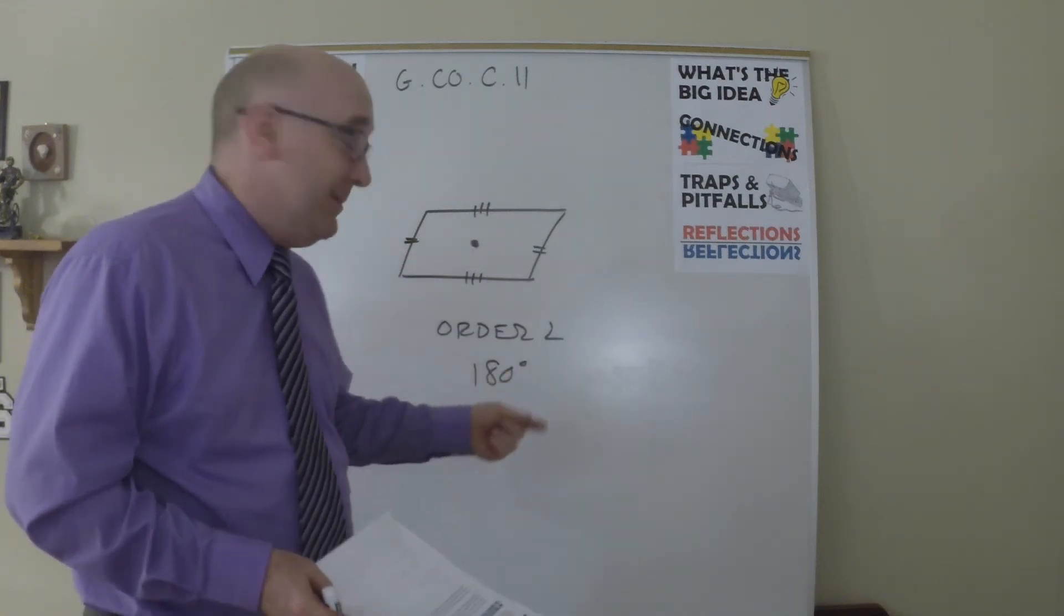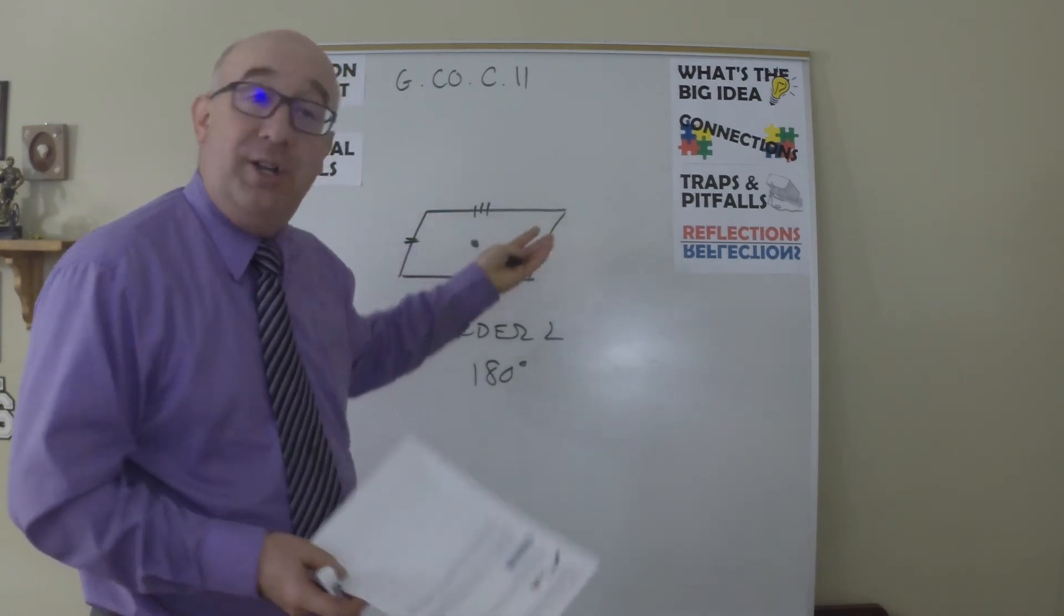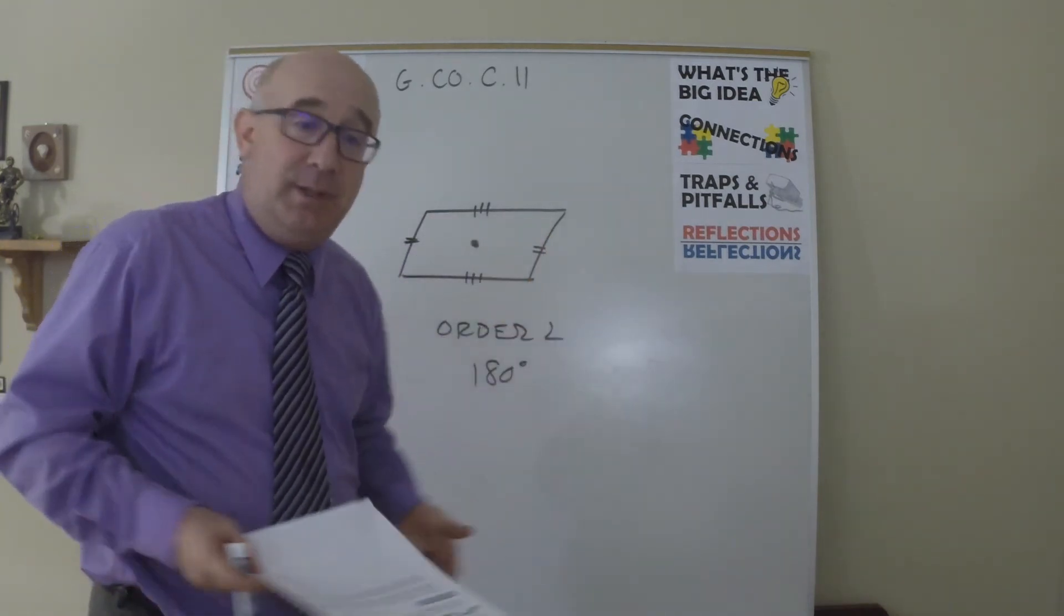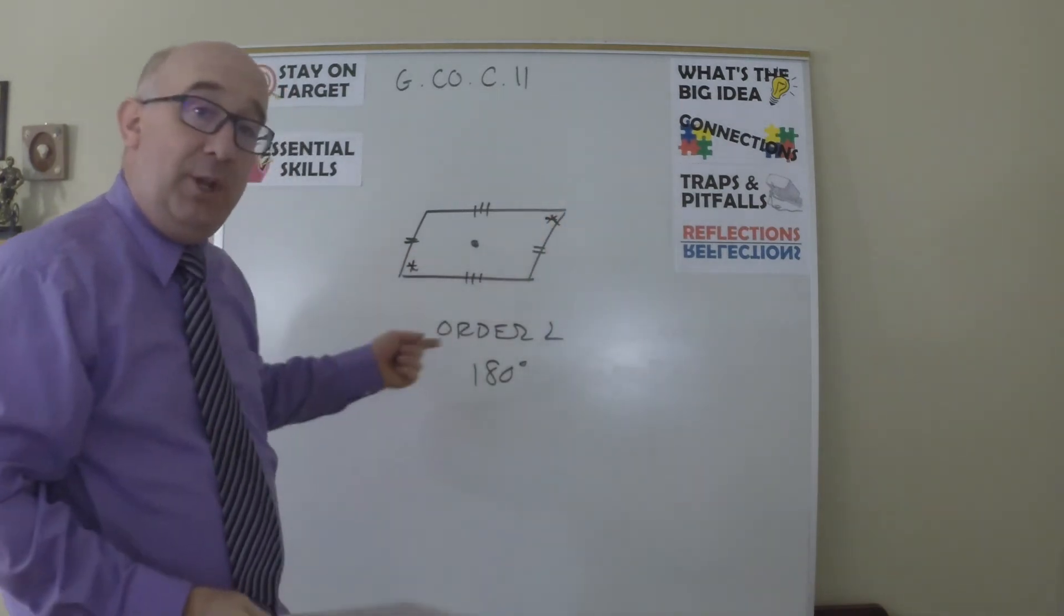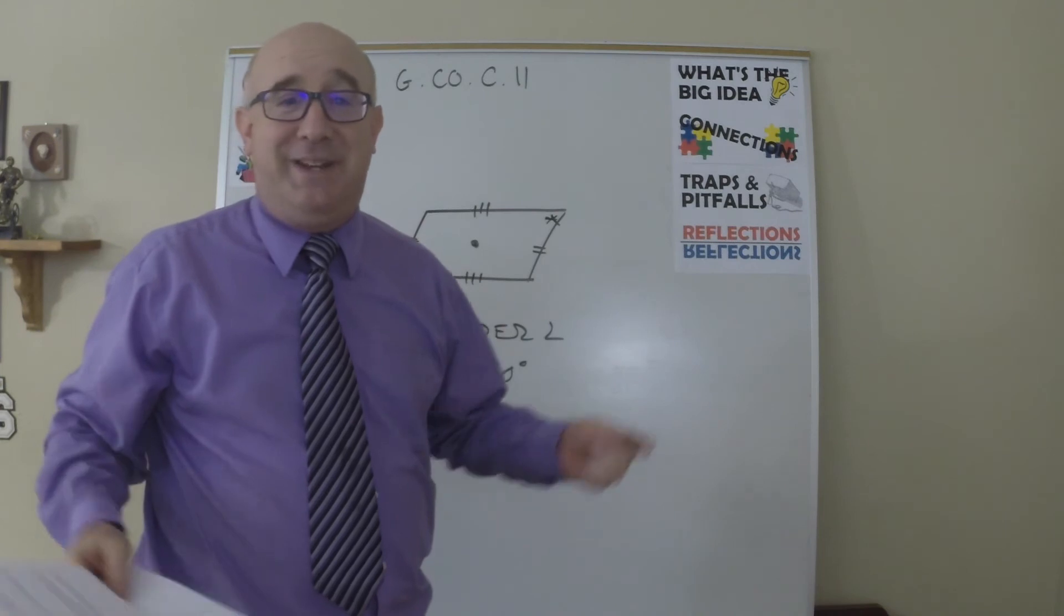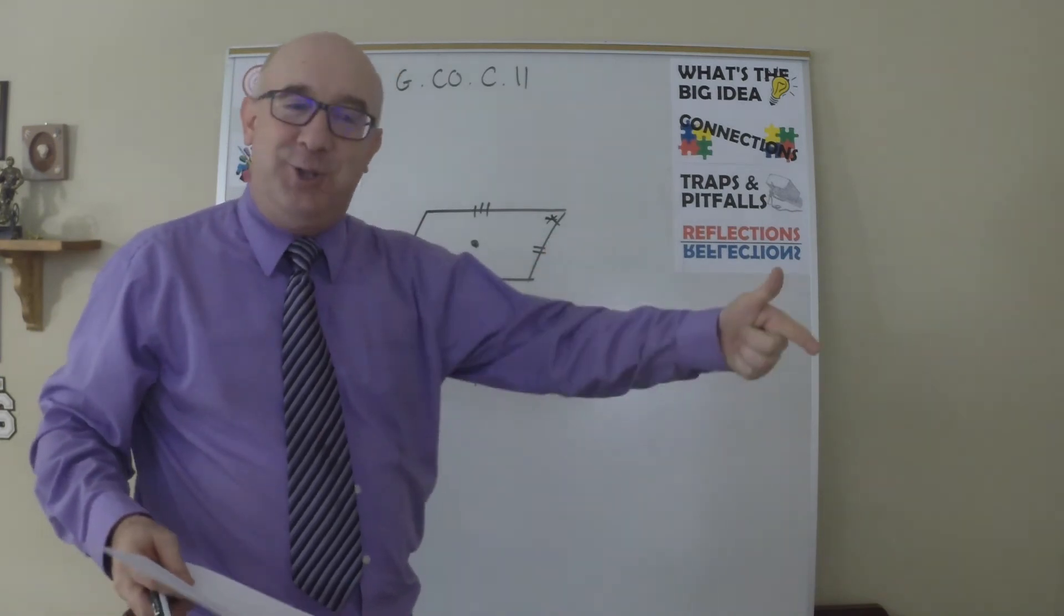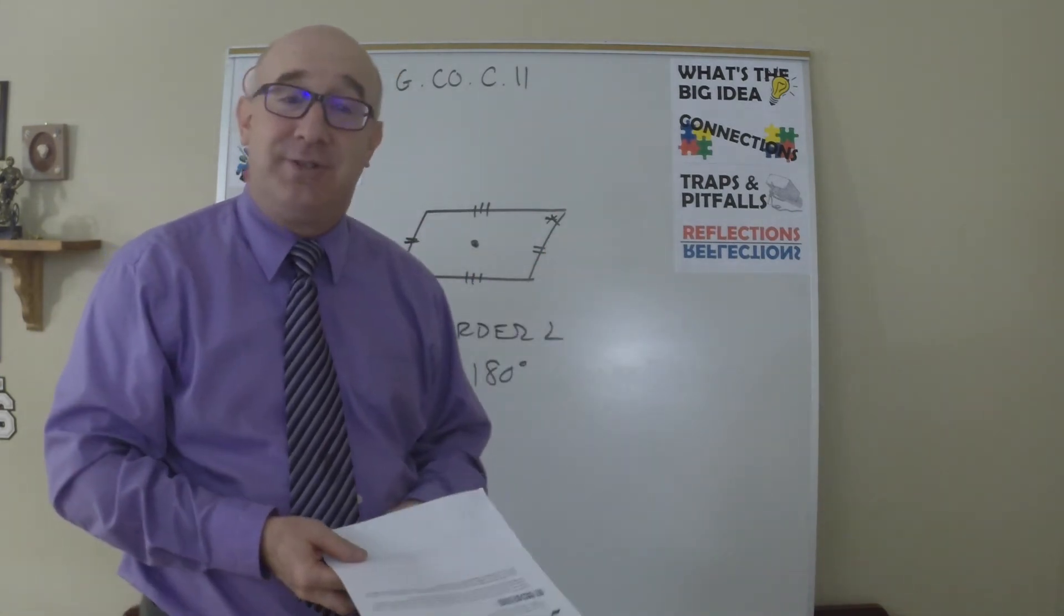Because if it has rotational symmetry, this will map onto this. It has to, established. Same thing with a property like this. Is it not easy for me to speak that opposite angles have to be equal because they will map onto each other because of rotational symmetry of 2?